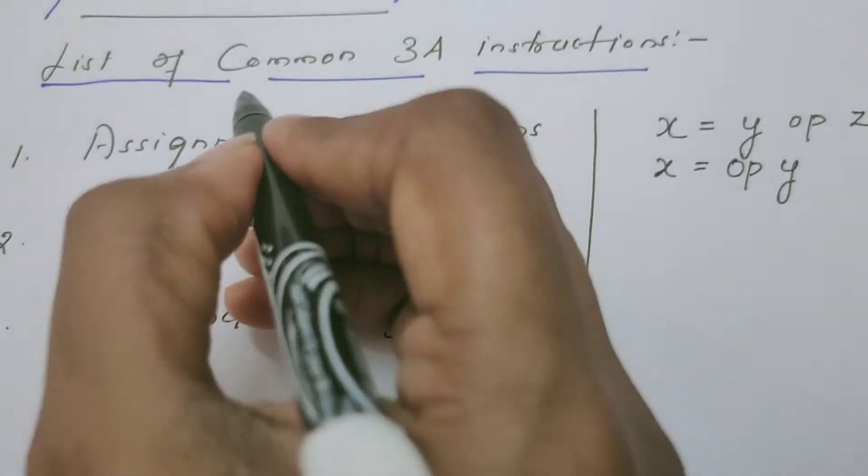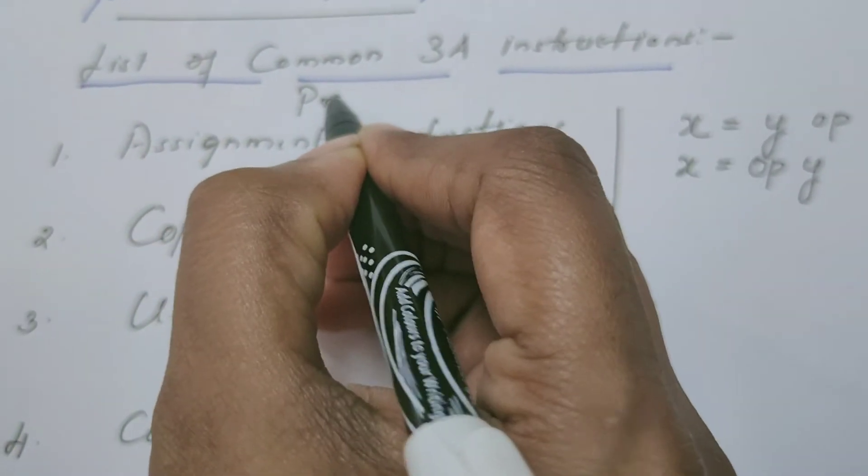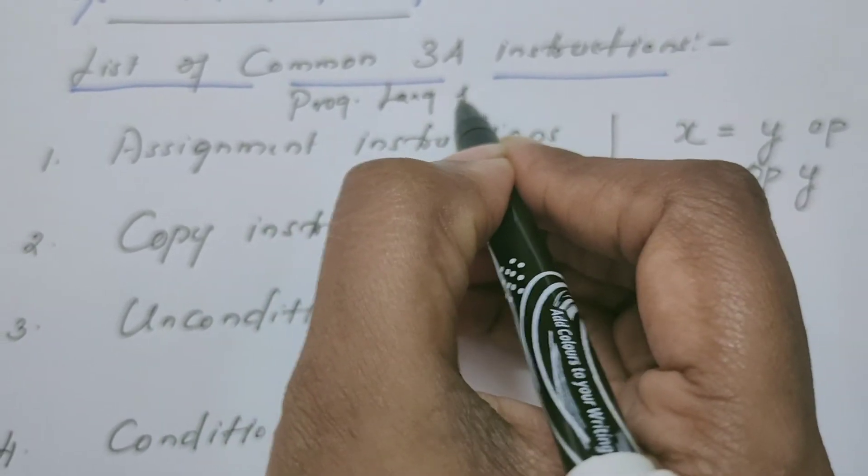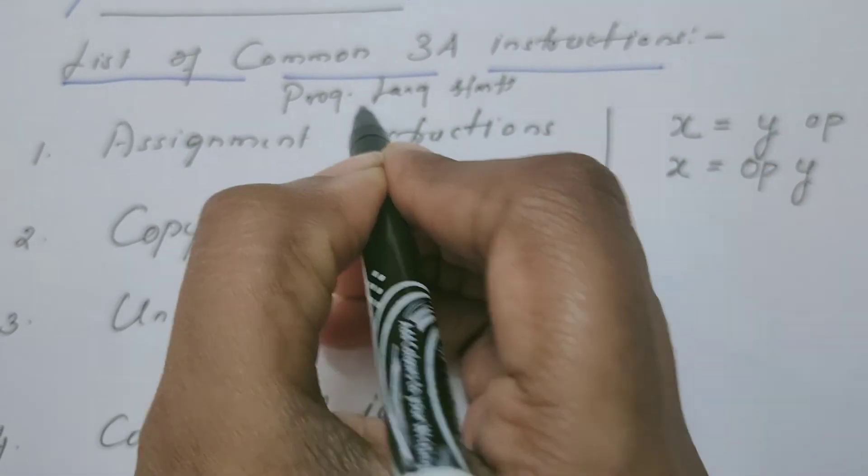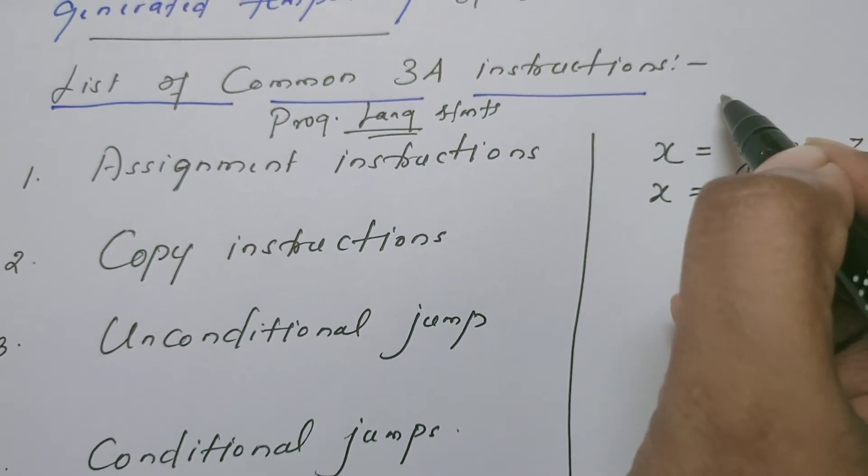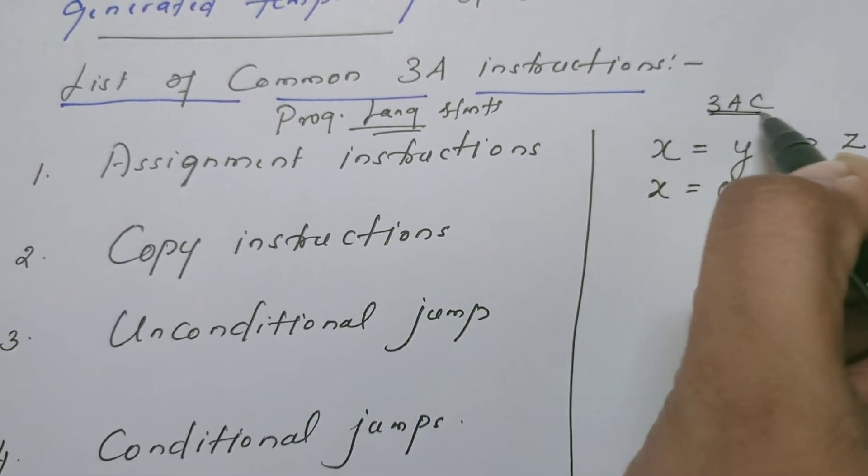Whatever is there on the left hand side is the programming language statement. Whatever I am writing on the right hand side is the equivalent 3 address code.